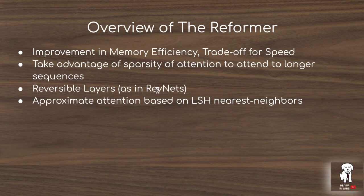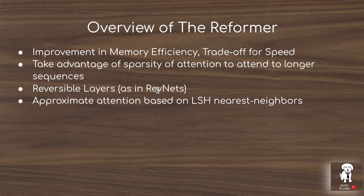They also introduce reversible layers. As in the RevNets paper, they structure the layer outputs so you can decompose the output y into y1 and y2, allowing you to backtrack and recover x1 from y2. This way you only need to store activations in the last layer and can recompute intermediate activations during backpropagation. Instead of storing all intermediate activations, you have more computation through backprop but save the memory cost.